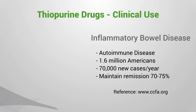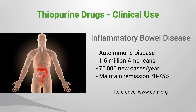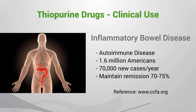Thiopurine drugs are commonly prescribed to treat inflammatory disorders such as Crohn's disease and ulcerative colitis. Although there isn't a cure, thiopurine drugs are effective in 70% to 75% of patients with inflammatory bowel disease, and they are used to help maintain remission.